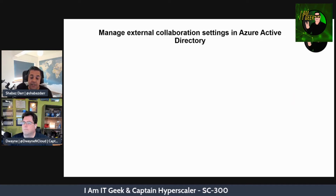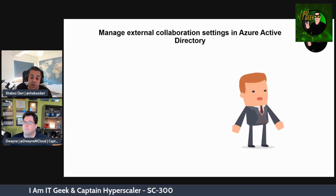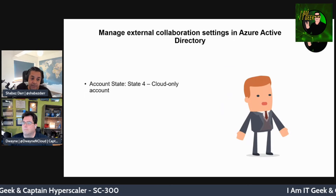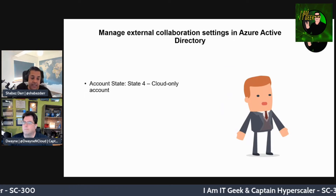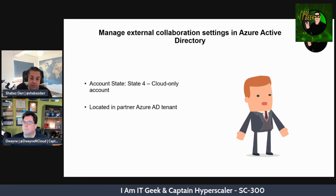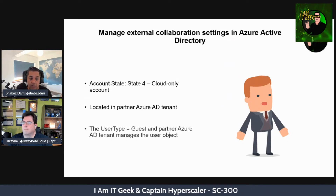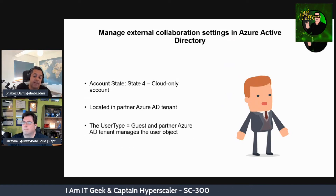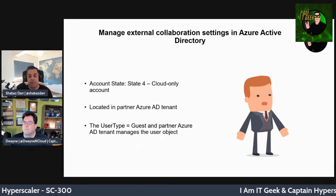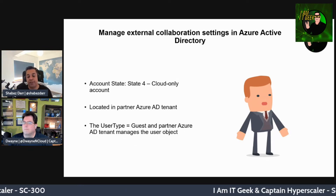Finally, account state four is cloud-only — the simplest. The user is located in the Azure AD partner tenancy, cloud to cloud. The user type equals guest here as well, and they go through the same redemption process where you send an invite — bulk or individual — and they redeem it.